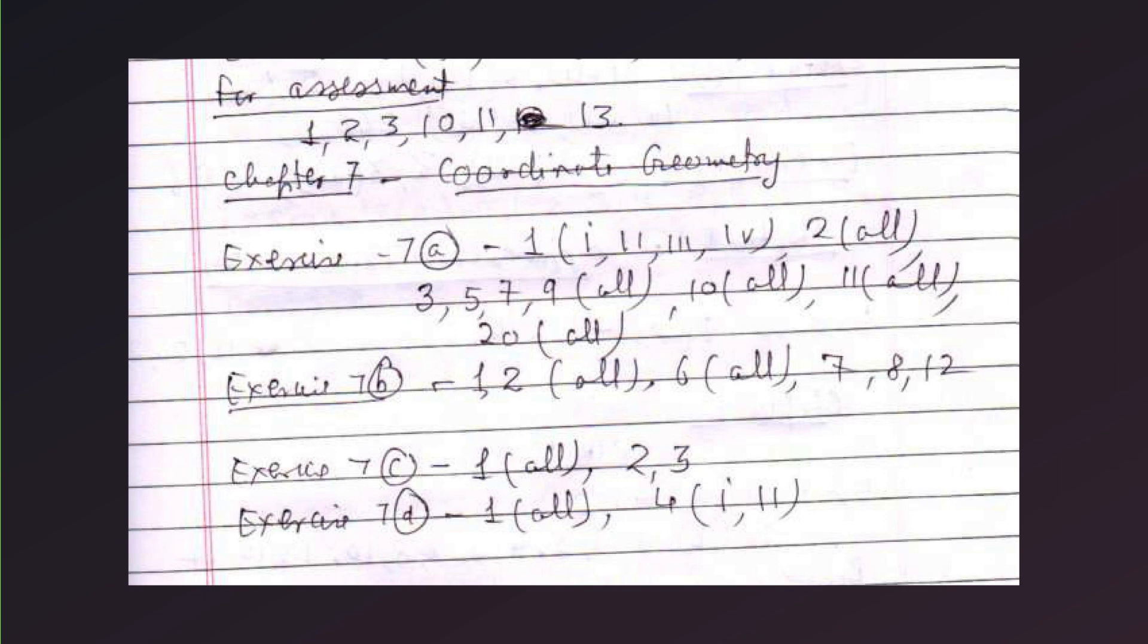Chapter 7 is coordinate geometry. Exercise 7A. Under that, question number 1, under this 1, 2, 3, and 4. Question number 2 all, 3, 5, 7, 9 all, 10 all, 11 all, 20 all. Exercise now 7B, 1, 2 all, 6 all, 7, 8, 12. Exercise 7C, 1 all, 2, 3. Exercise 7D, 1 all, 4 numbers 1, 2.